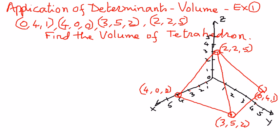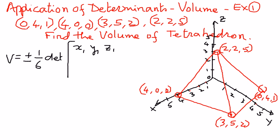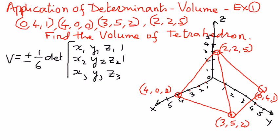The formula for the volume of a tetrahedron is given as plus or minus 1/6 times the determinant of the matrix with rows (x1, y1, z1, 1), (x2, y2, z2, 1), (x3, y3, z3, 1), and (x4, y4, z4, 1). Once we find the determinant of this matrix, we should be able to find the volume.